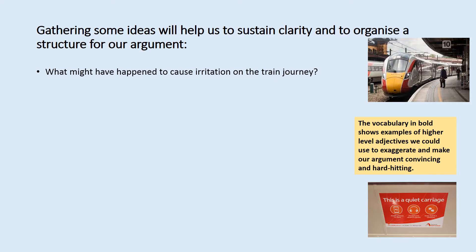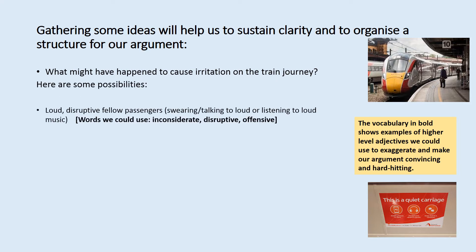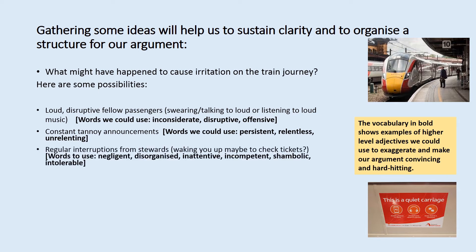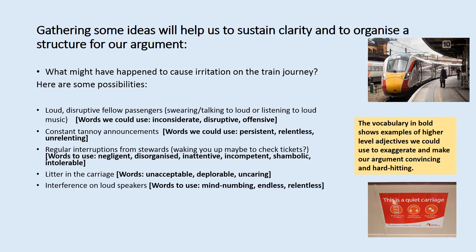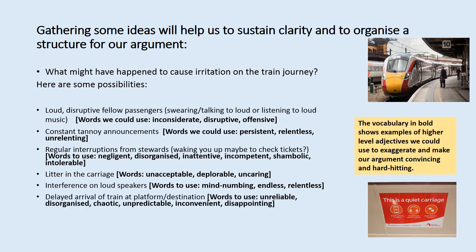Gathering some ideas to help us sustain clarity and organise a structure for our argument — what might have happened to cause irritation on the train journey? These are just some possibilities. You could talk about loud, disruptive fellow passengers — they could be talking really loudly or playing their music loudly. Constant tannoy announcements is one of the things Mr Gilbert talked about in his comedy show — these could be crackling and involving interference. There could be regular interruptions from people working on the train, litter in the carriage, interference on the loudspeakers, a train delay, or a lack of availability of facilities on board.